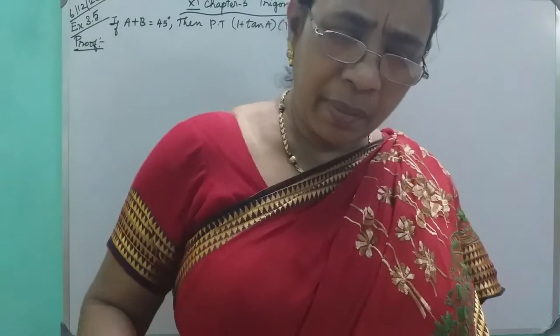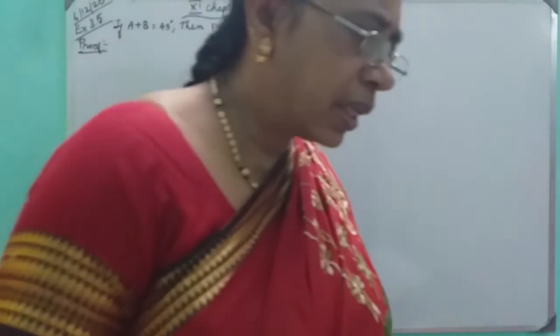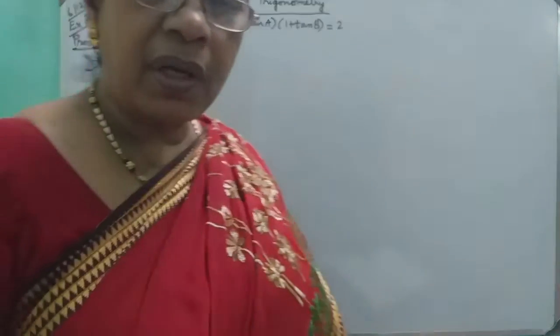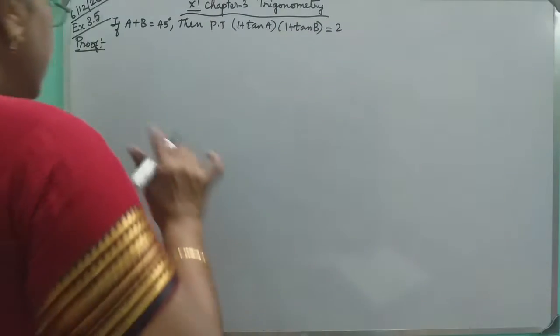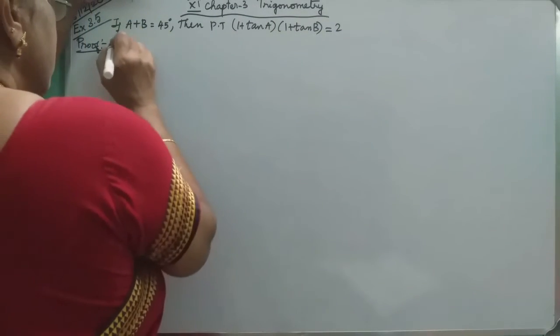Tan has a problem. That's why you have to prove it. A plus B is equal to 45. Two points are done. Tan is applied. What do you prove it?